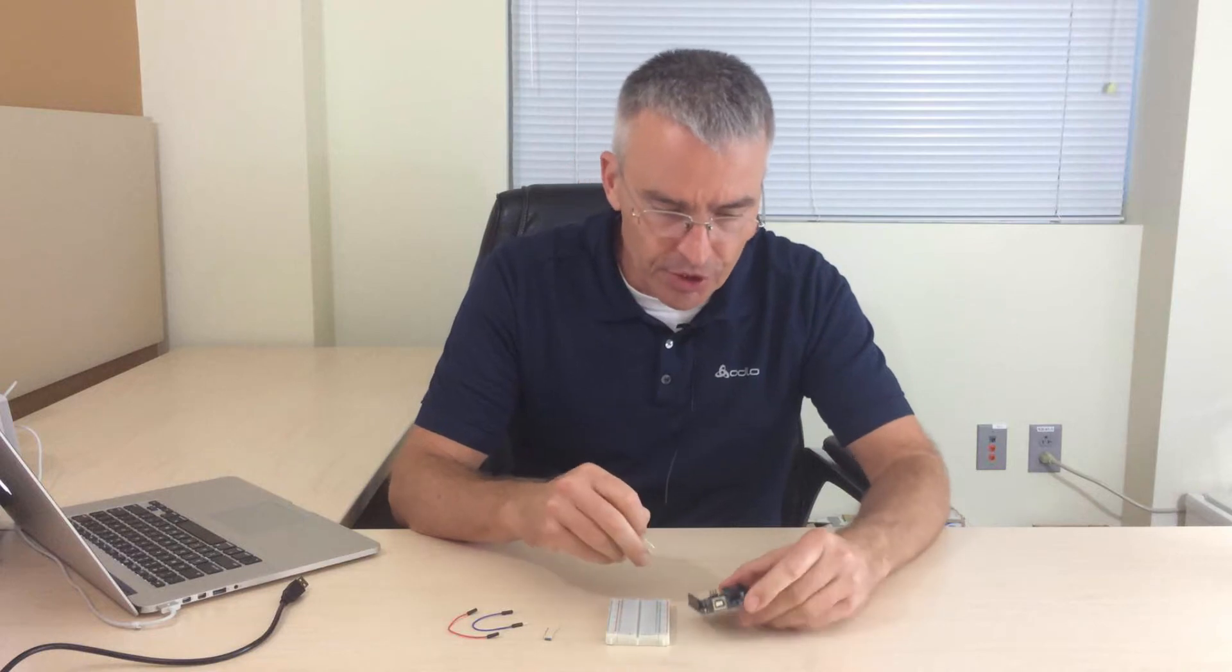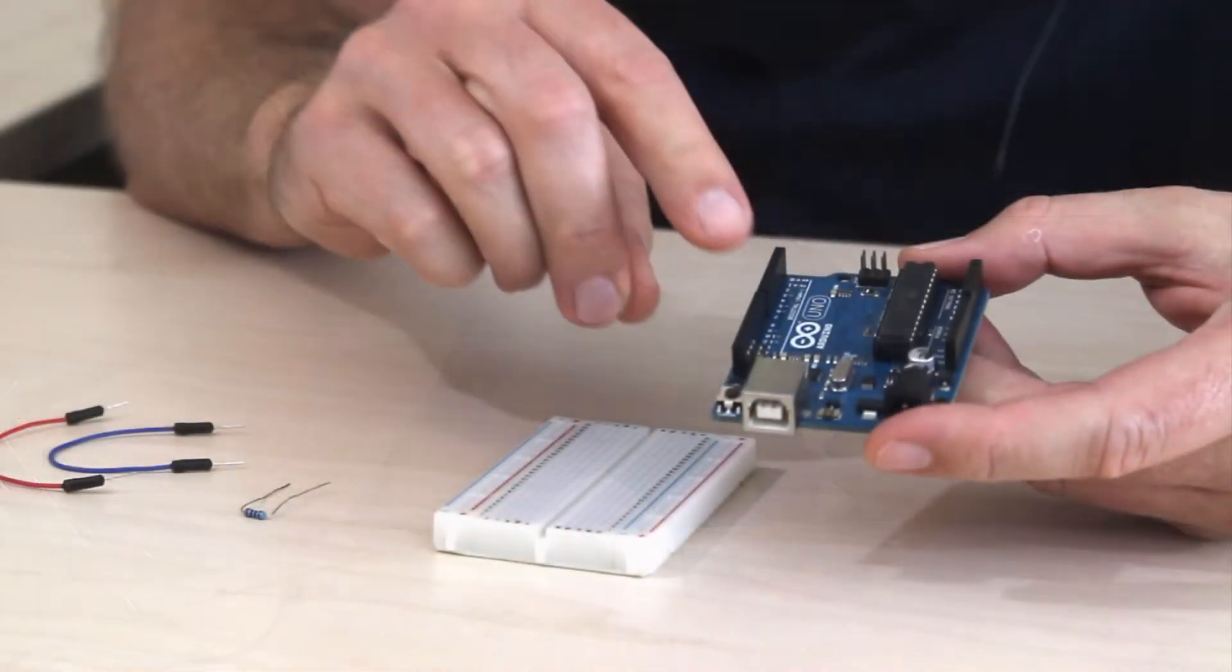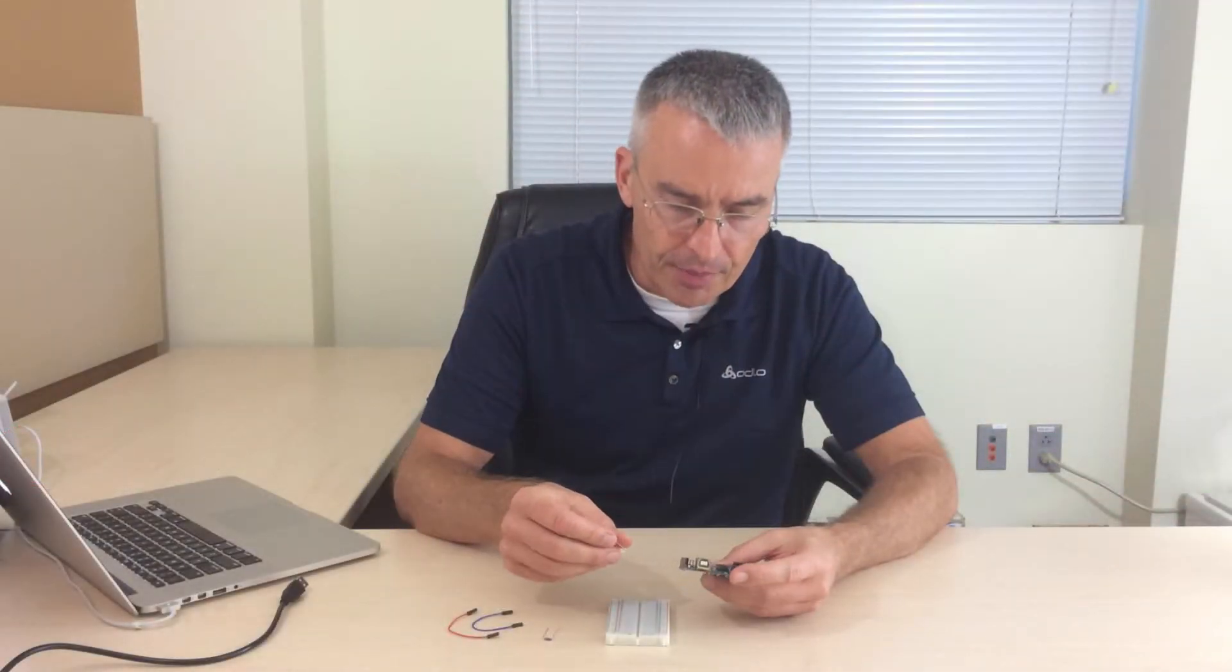Okay, so the first step is to connect the LED to one of the digital pins of the Arduino. The digital pins on the Arduino are labeled 0 to 13 on the left side, and we'll just use pin 6 for this experiment.